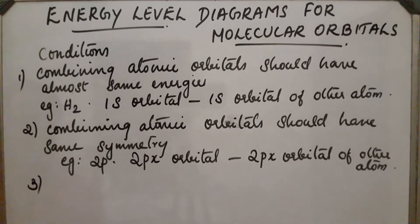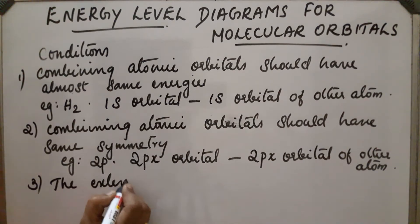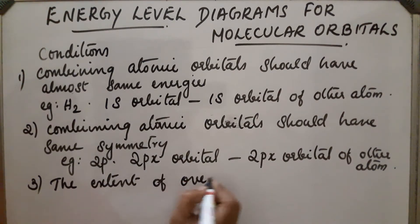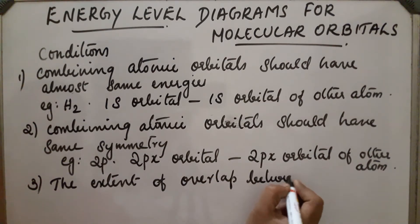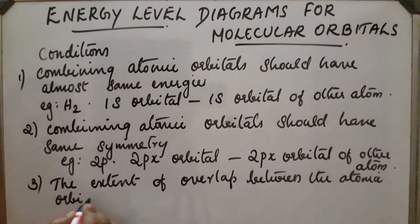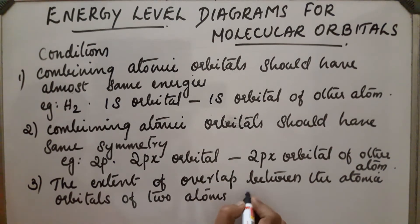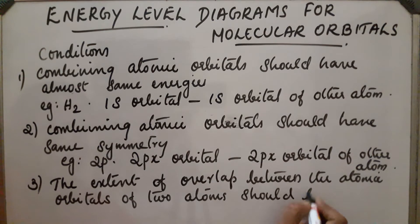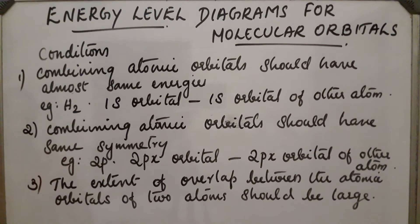Third point: the extent of overlap between atomic orbitals of two atoms should be large. Greater the extent of overlap, greater will be the electron density between the two nuclei, and stronger will be the bond. So the extent of overlap between the atomic orbitals of two atoms should be large.